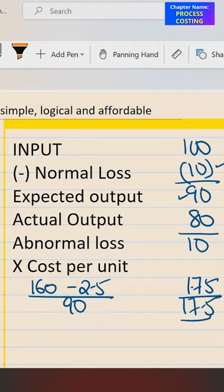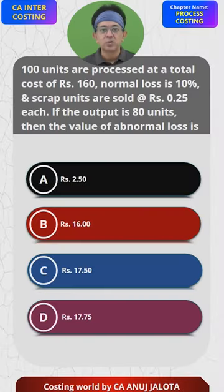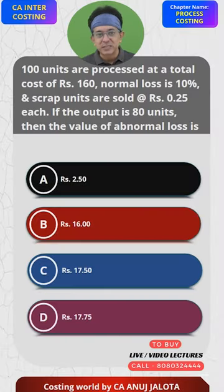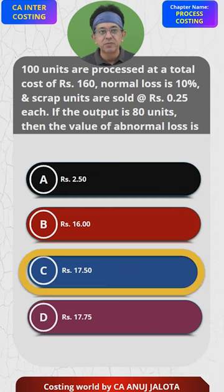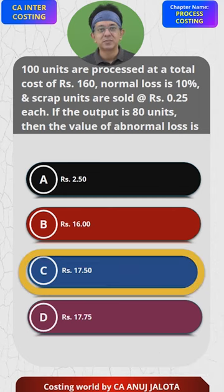Therefore the answer should be 17.5, so the answer in this case is C — 17.5. That's the correct answer.